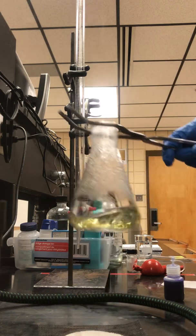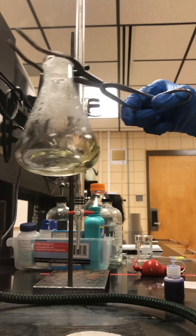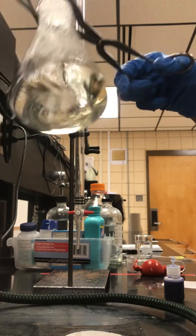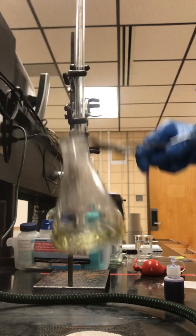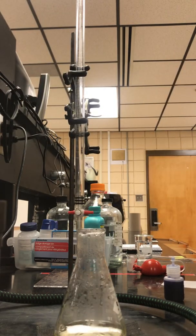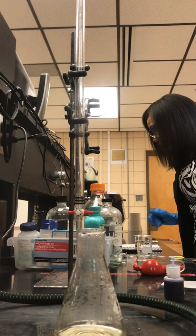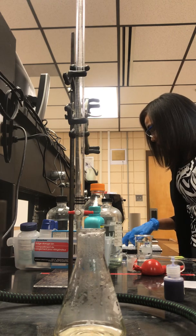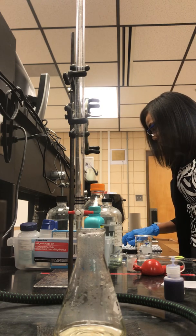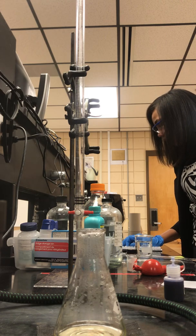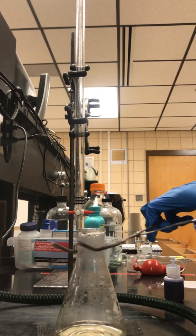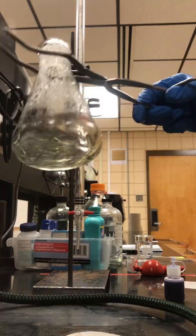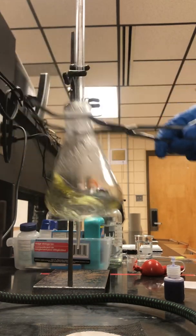I'm going to give that a swirl and you will notice my solution turned yellow. Go back to the directions. It tells you if the solution is blue, pipette an additional 10 milliliters of acid and repeat as often as needed. But ours turned yellow, so we are fine.